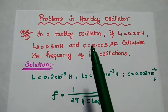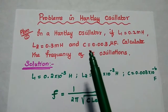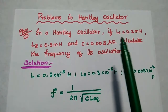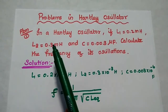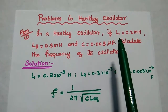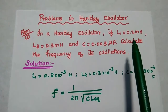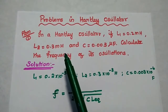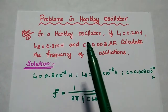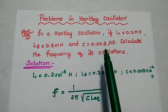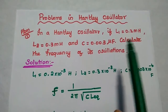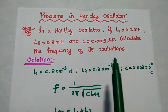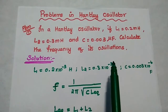Dear students, now we are going to solve important problems in Hartley oscillator. In a Hartley oscillator, if L1 is equal to 0.2 mH, L2 is equal to 0.3 mH, and C is equal to 0.003 microfarad, calculate the frequency of its oscillations.